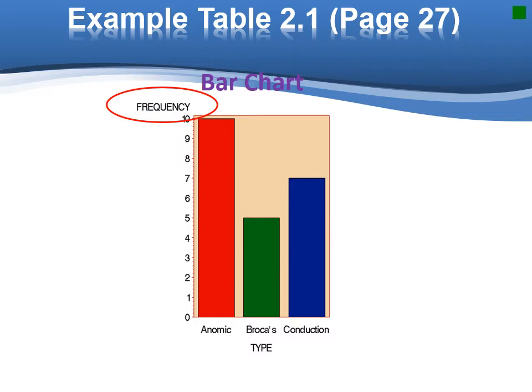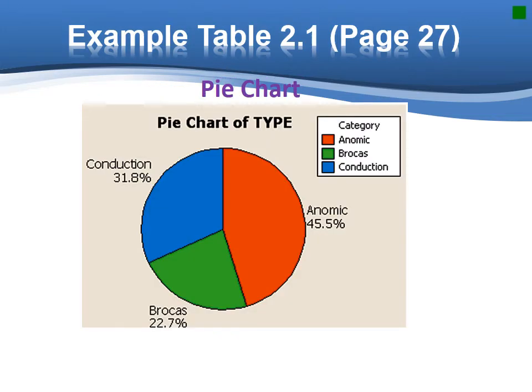Although the frequency table describes the data, we often want a graphical presentation as well. The two most widely used graphical methods for describing qualitative data are bar chart and pie chart. This figure shows the frequencies of the three types of a fissure in a bar graph. Note that the height of the bar is equal to the class frequency. We also use pie chart to show the relative frequencies. Note that the size of the pie slice assigned to each class is proportional to the class relative frequency.